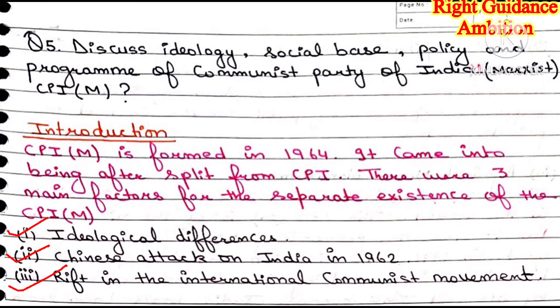Second, the Chinese attack on India in 1962. India and China were at war, and members of the party were not supporting Congress. Third, rift in the international communist movement. Two ideologies are famous in the whole world: capitalism, which talks about privatization, and communism, which talks about public resources and government control. This communist movement was global, and leaders were supporting it. These are the three main differences in which CPIM has been different from CPI.